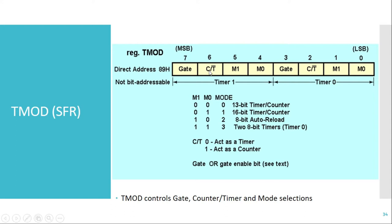If the C/T̄ bit is 1, it means we are going to operate the timer as a counter. In counter mode, we have to give external clock pulses as input to the timer. Those clock pulses are given on the T0 pin for Timer 0 and the T1 pin for Timer 1.